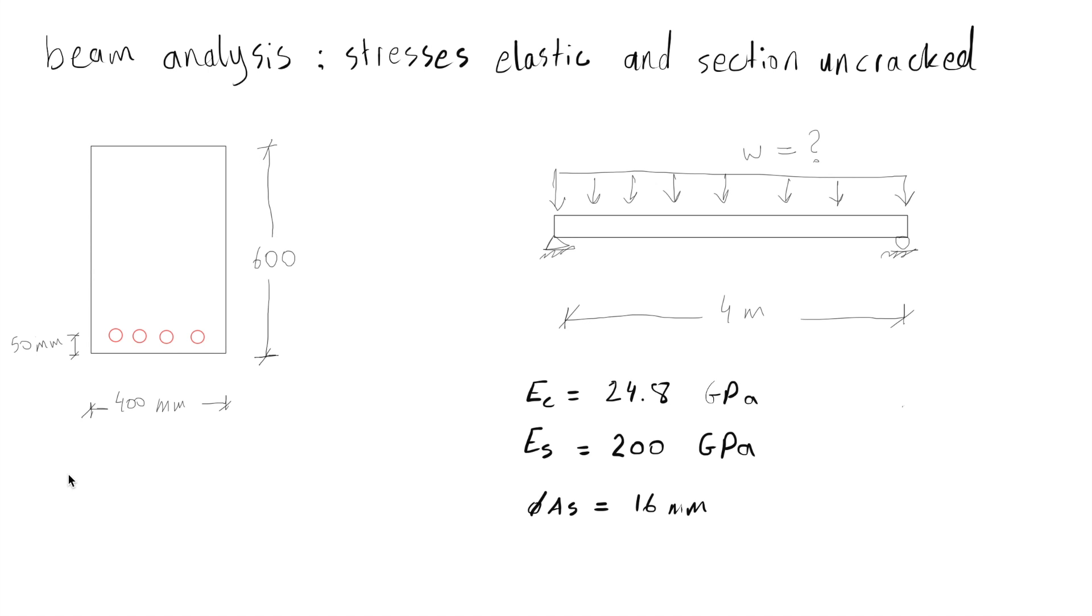So first we have to find the stiffness ratio between the concrete and steel, and we call it n. So n equals to modulus of elasticity of the steel divided by the modulus of elasticity of the concrete, which equals to 200 GPa divided by 24.8 GPa, and this makes 8.